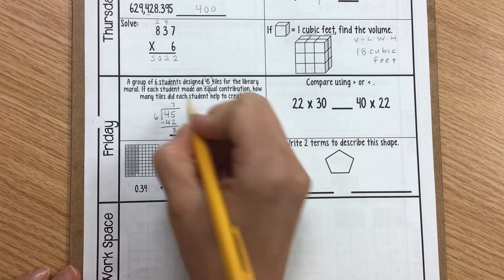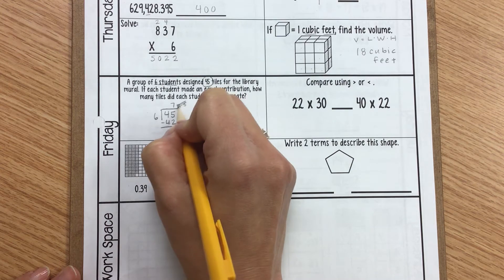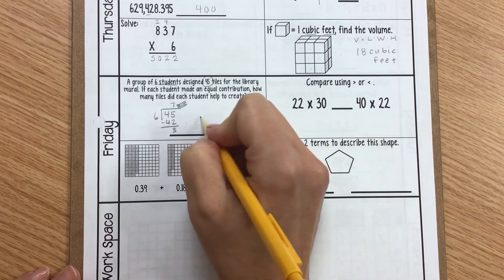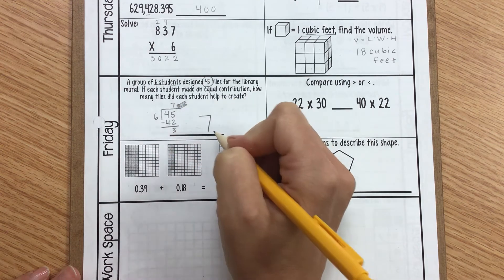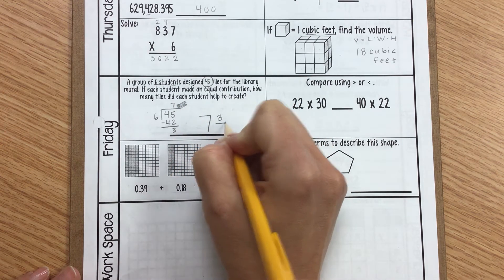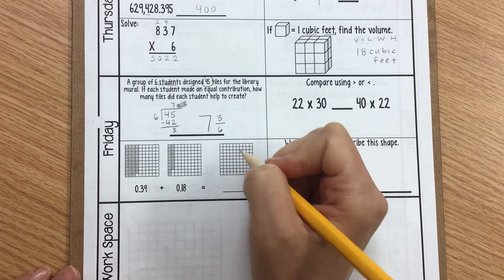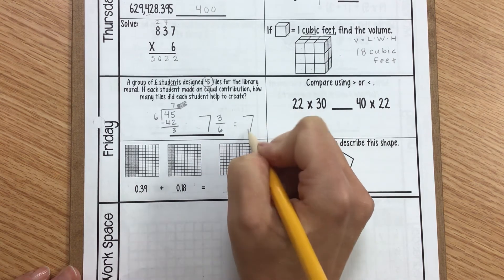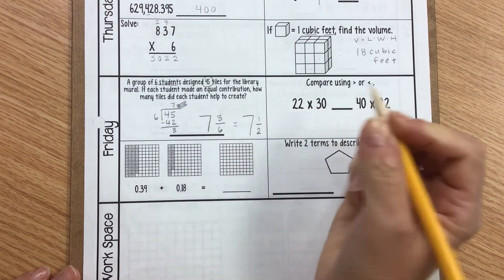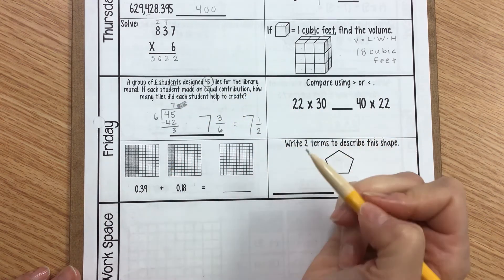So because I'm in 5th grade, I'm not going to say remainder of 3. No, that's not what we do in 5th grade. So I'm going to use this 3 and I'm going to say a whole number of 7. And instead of saying remainder of 3, I'm going to put a 3 over 6 and I'm going to get a fraction. But we also know in 5th grade that 3/6 is the same thing as saying 1/2. So each student made 7 and a half tiles.